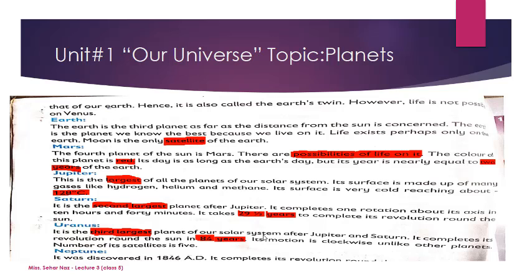Life is not possible on Venus. The Earth is the third planet as far as the distance from the Sun is concerned. The Earth is the planet we know the best because we live on it. Life exists perhaps only on Earth.